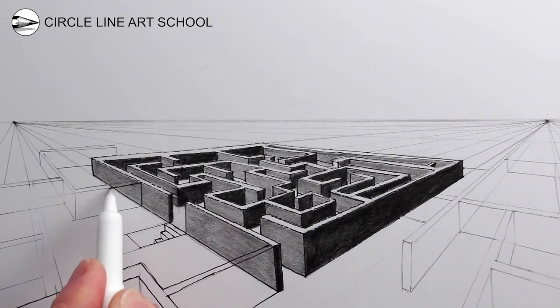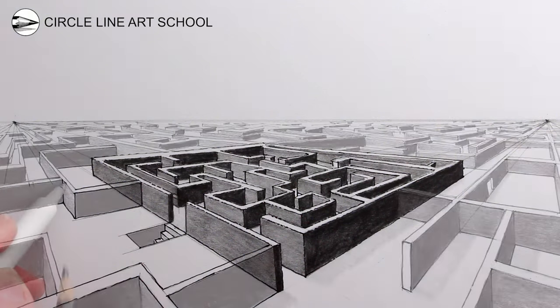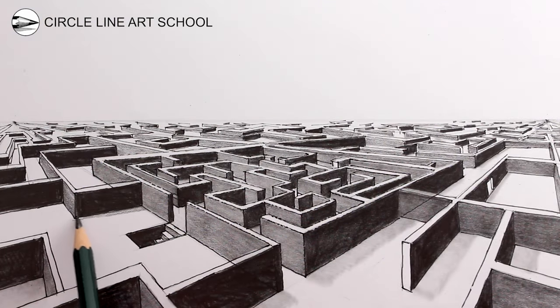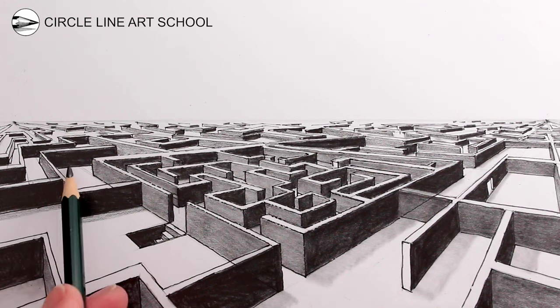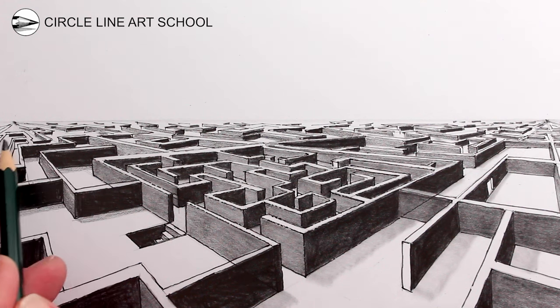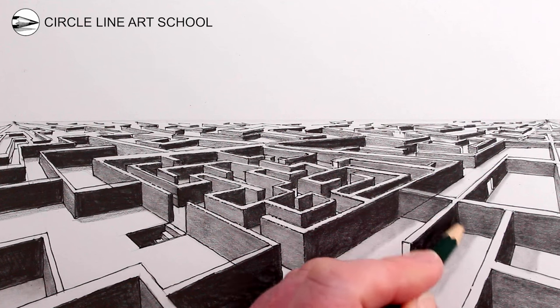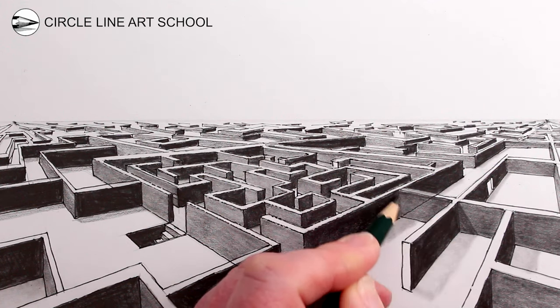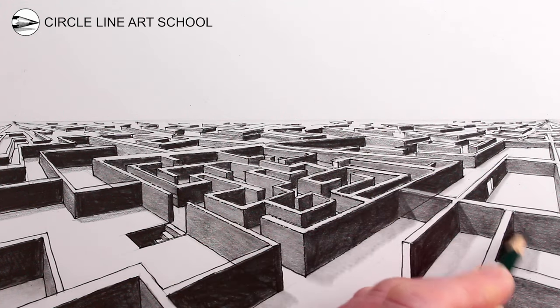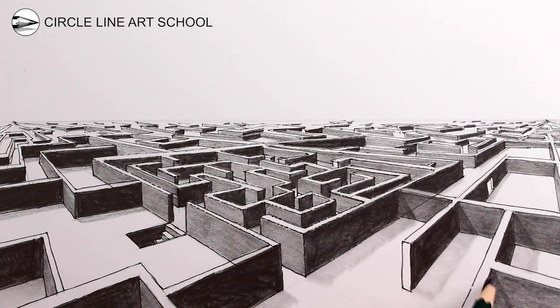You could also add a cast shadow on the darker side of the maze structure on the ground just below it, and then a triangle of shadow on any areas where the cast shadow can be seen by a corresponding edge.